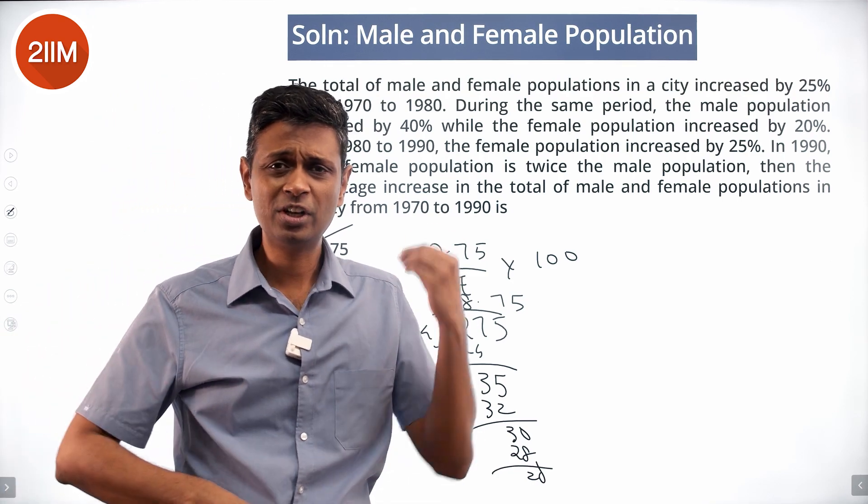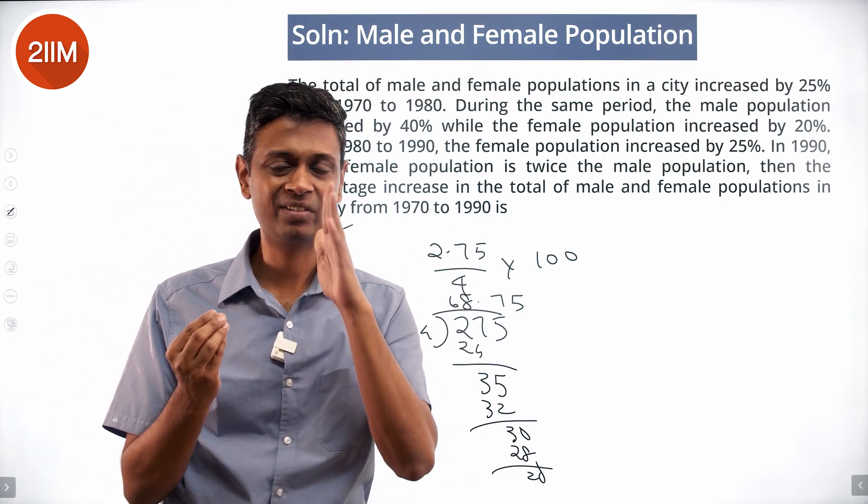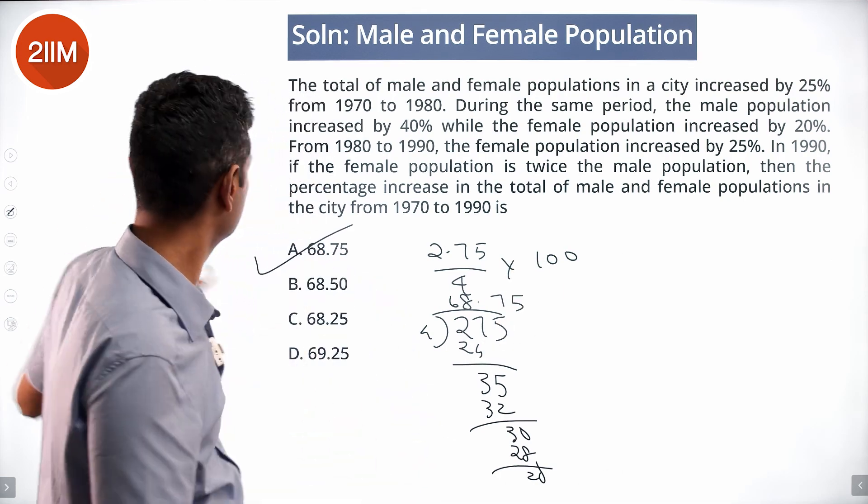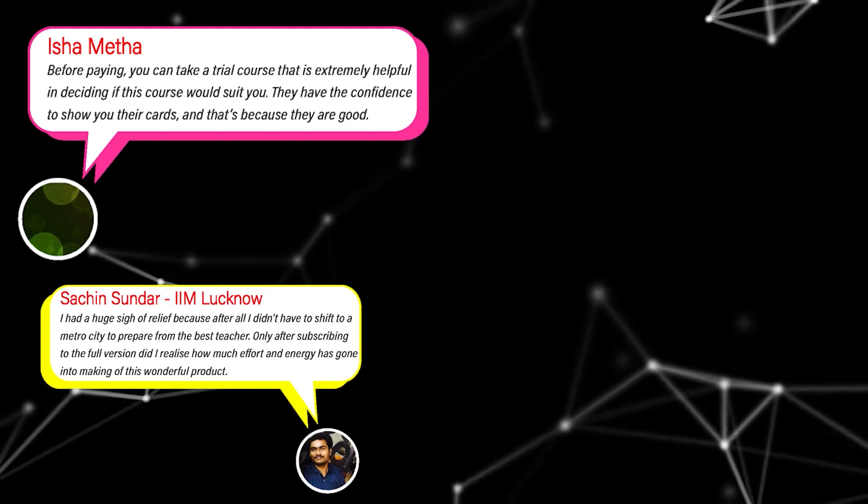The first equation gives you the ratio of male to female population. Track it from '70 to '80, '80 to '90, write down the equation, and you're through.